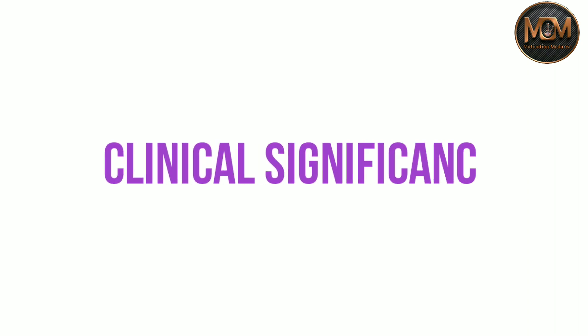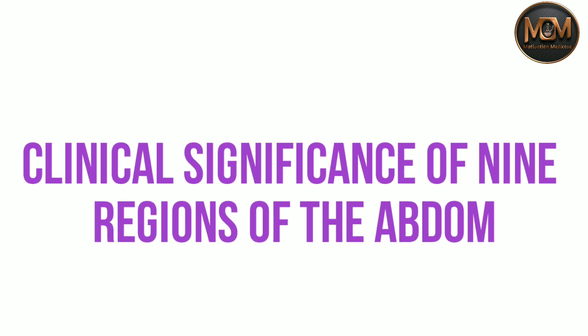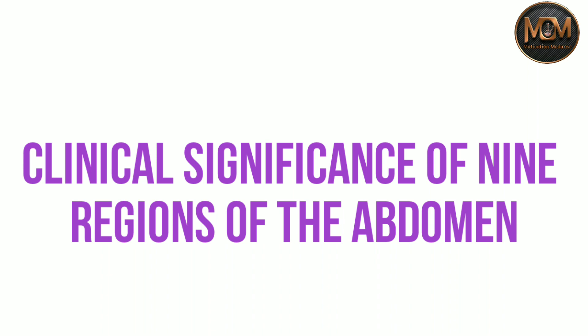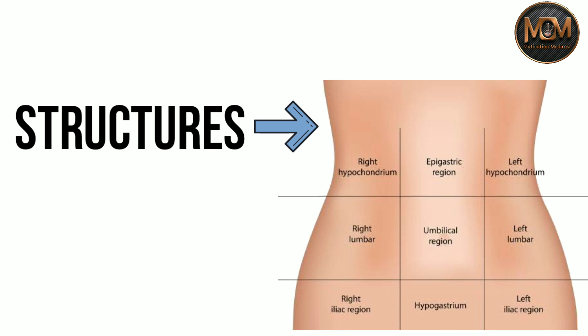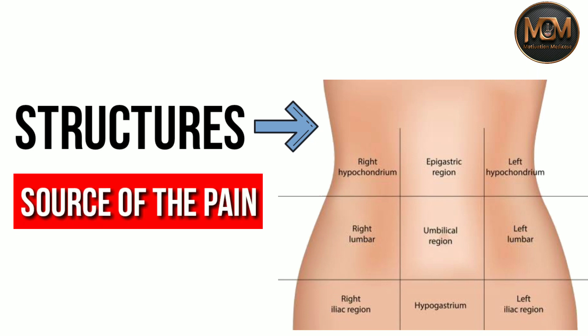Today we are going to talk about the clinical significance of nine regions of the abdomen. You must have knowledge about the structures that are present in the nine regions of the abdomen because it will help you to know the source of the pain. If you don't know the structures, we have made a note on it and uploaded it on our Instagram page — the link is in the description. So without wasting time, let's get started.